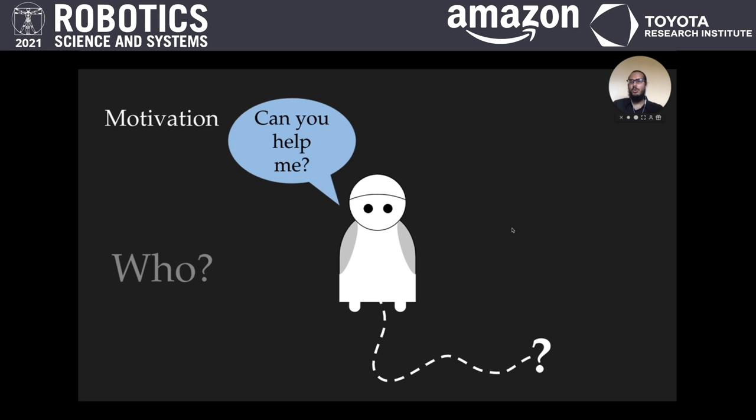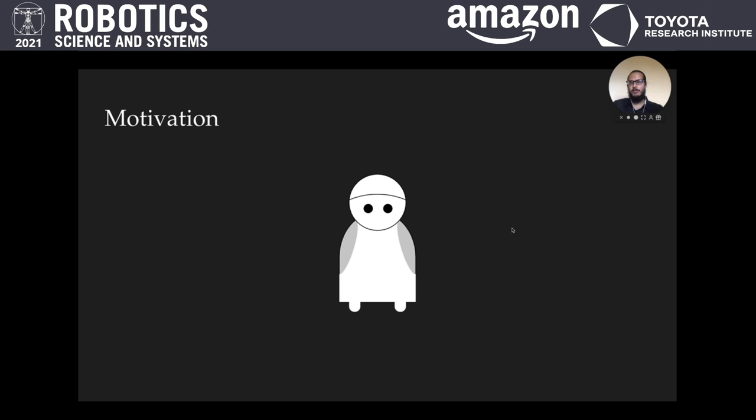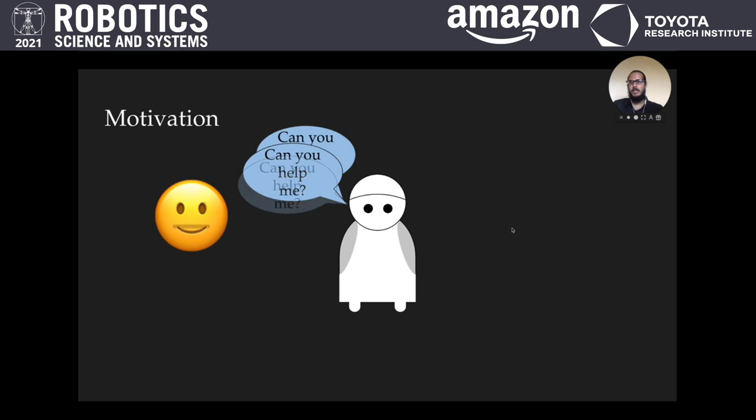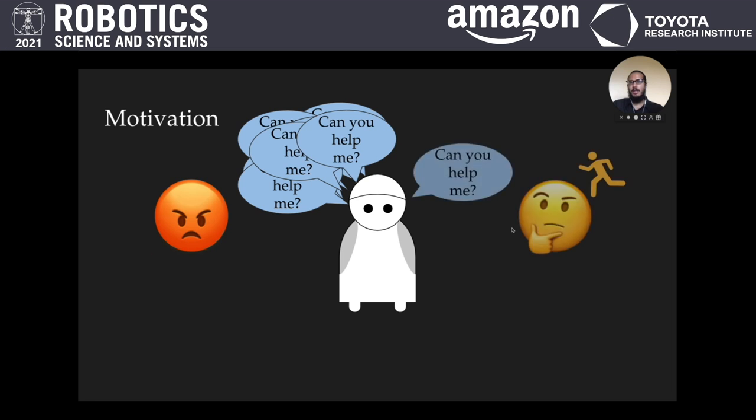Yet, the question of who and when to ask for help is nuanced. Past work has revealed that a robot that asks for help too much could lead to people getting annoyed, as can a robot that asks for help at the wrong times. Yet, a robot that doesn't ask for help enough may be unable to complete its tasks efficiently.